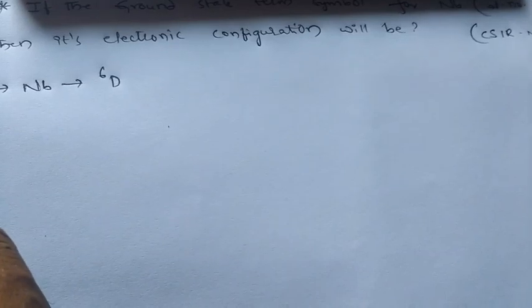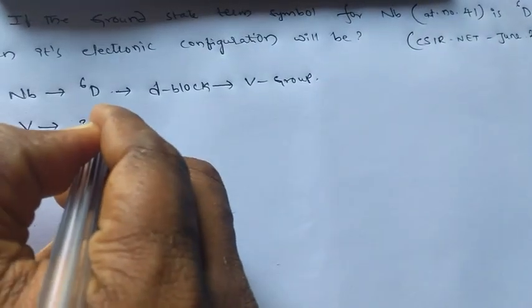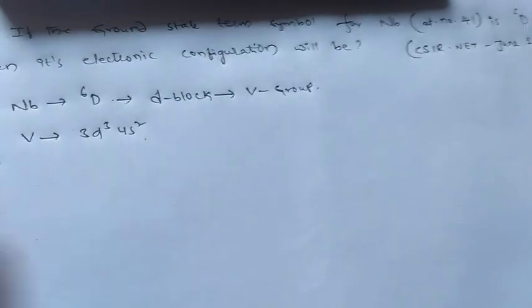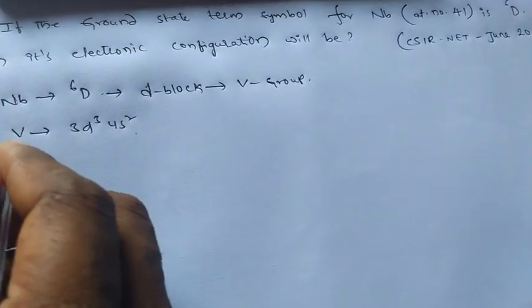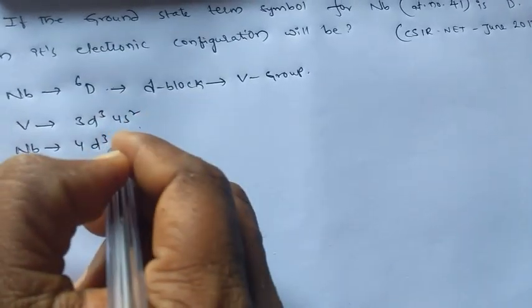Okay, so we have niobium and it has D6 term symbol. Niobium belongs to D block, or indeed belongs to vanadium group. Normally if you observe electronic configuration of vanadium, we know that 3D3 and 4S2. We can simply think that niobium also has same electronic configuration.